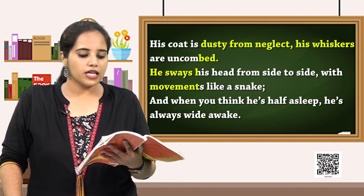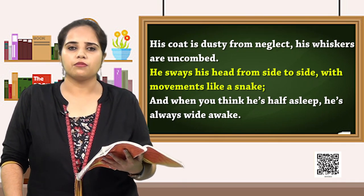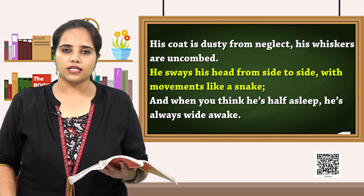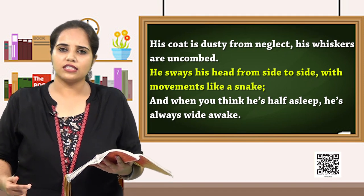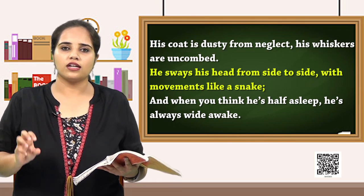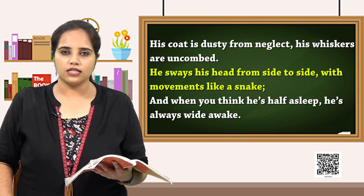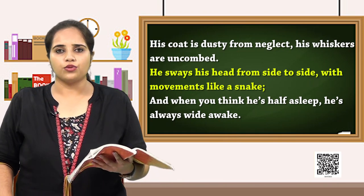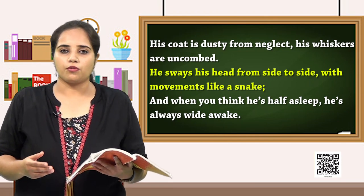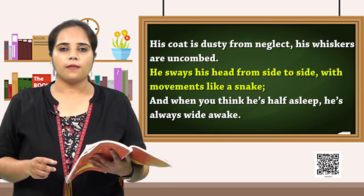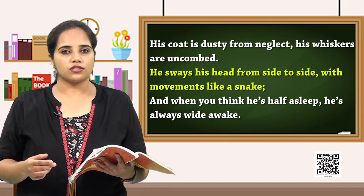He sways his head from side to side with movements like a snake. Why is there a special mention of a snake here? Because when a snake is moving its head from side to side, it is said to be very actively thinking and wanting to go for hunting its food. That is why it is a special mention here — saying Macavity is like that snake which is wanting to go on for hunting and grabbing something for his satisfaction. And that is why Macavity is always somebody who is in some deep processing of thoughts.